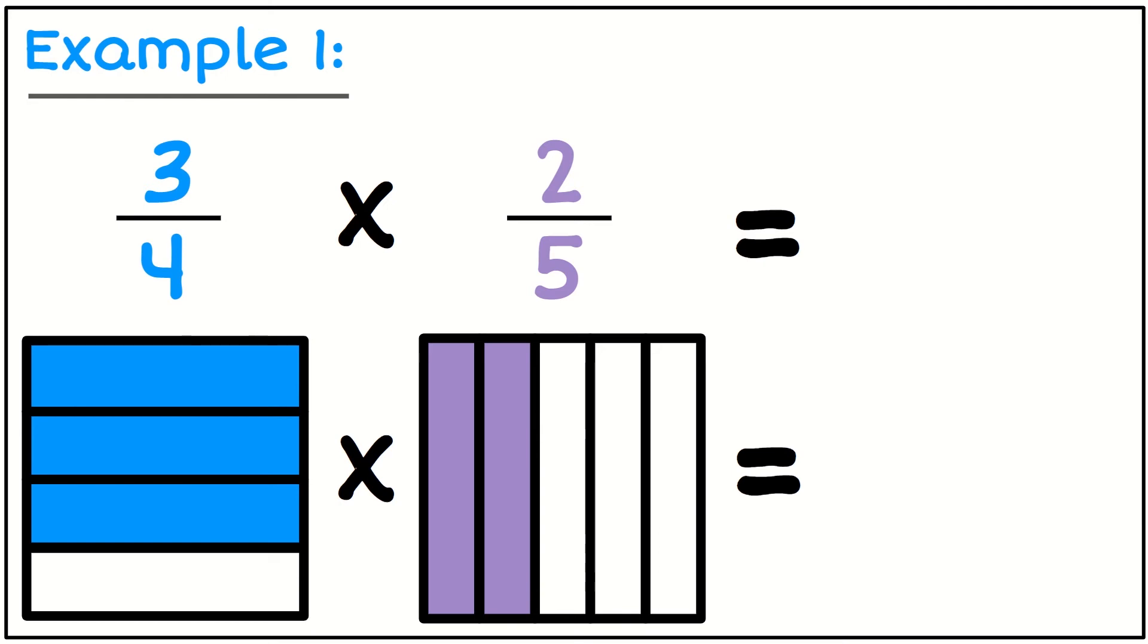I want to multiply three quarters by two fifths, so I want to find out how much two fifths of three quarters is. The answer is going to be smaller than the original amount.